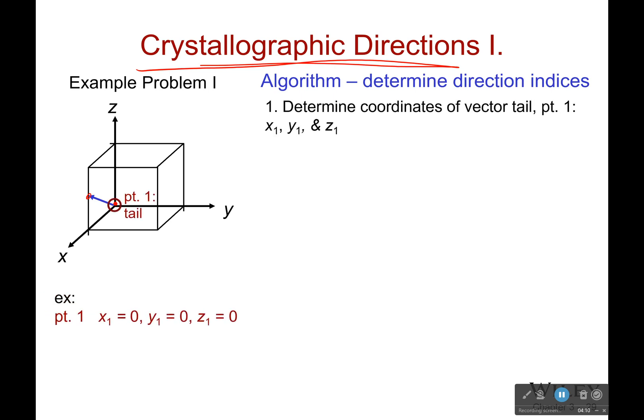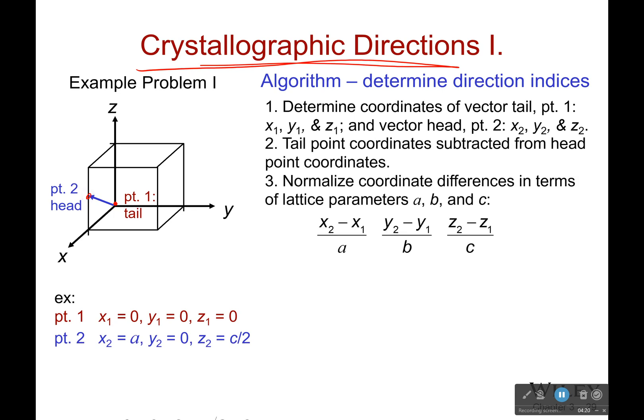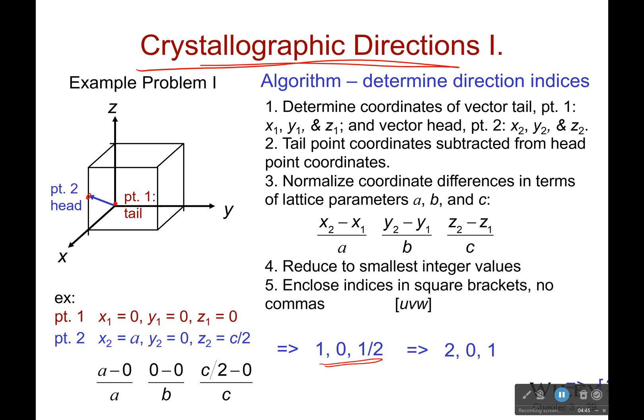So, I determine the coordinates of vector tail point 1. So, it starts at 0. And then it goes to A, 0, C over 2. So, I'm going to subtract those coordinates, and then divide them all by A, B, and C. Now, while your point coordinates could have a fraction, crystallographic directions never do. That's just how we do things. So, you will never have a fraction. So, how do you get rid of this fraction? We're going to multiply everything by 2. And then when you're done, you enclose everything in a square bracket. Square brackets are for directions. We're going to have several different things. Just remember that square brackets are for directions.